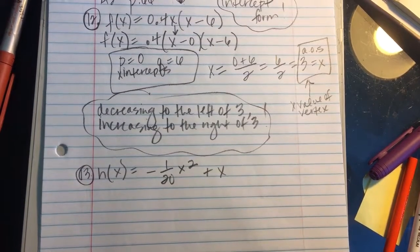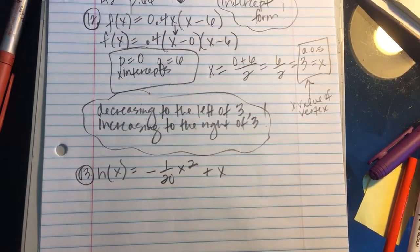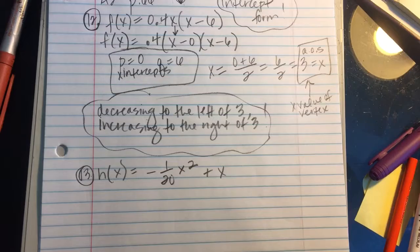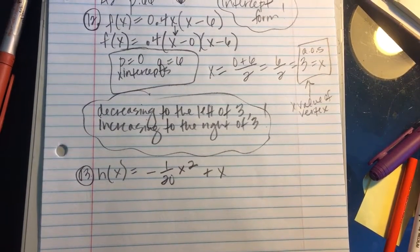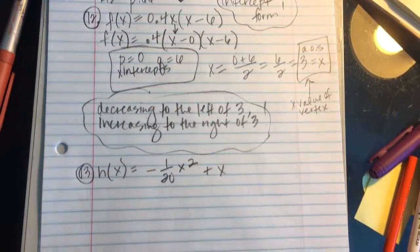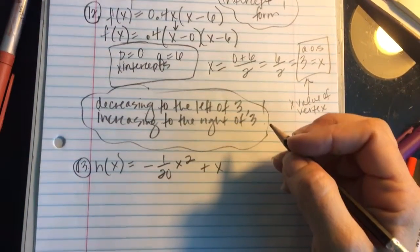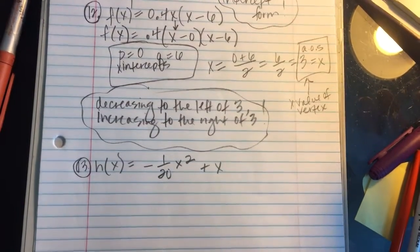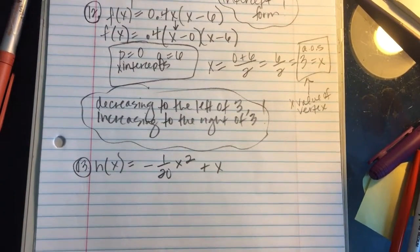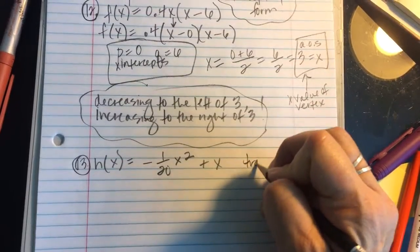When the grasshopper jumps off a rock, it lands on the ground 2 inches farther. Write a function that models the new path of the jump. So what I'm getting out of this is that when it jumps, it lands 2 inches farther. I'm looking at this as probably a translation. It lands 2 inches farther. Translation right 2.